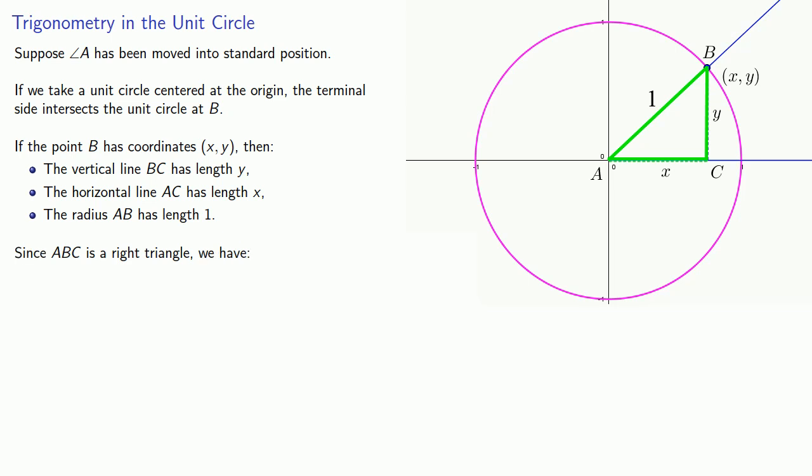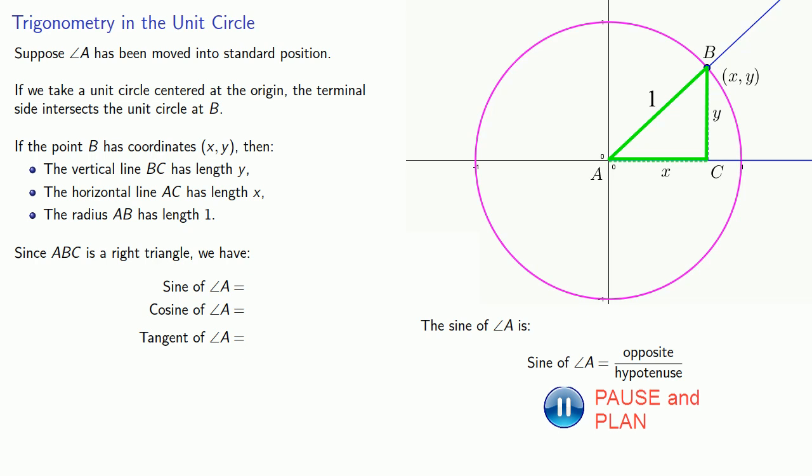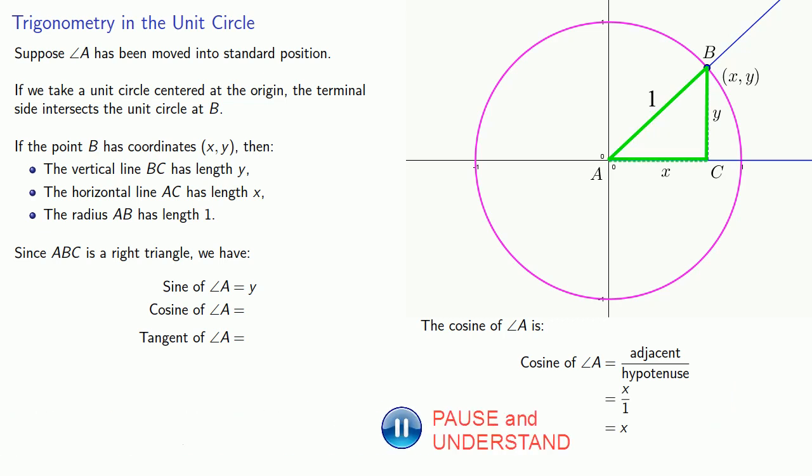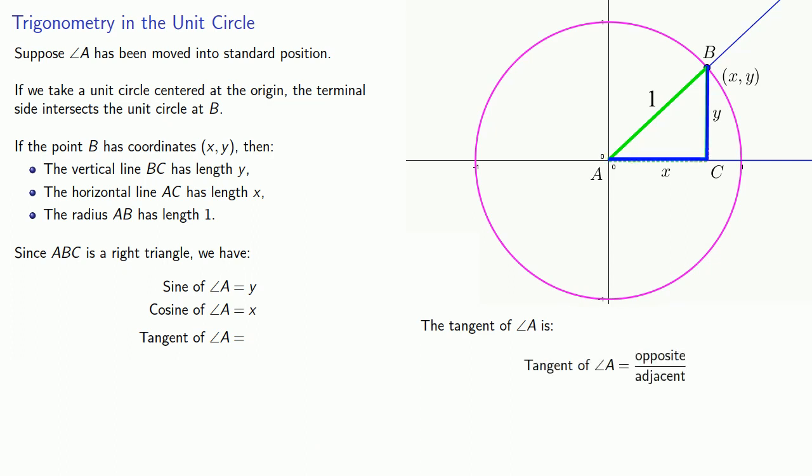Now since ABC is a right triangle, we can talk about the sine, cosine, and tangent of this angle A. So the sine of A is going to be the length of the opposite side divided by the length of the hypotenuse. That opposite side has length y, and the hypotenuse, because it's the radius of the unit circle, has length 1. So the sine is y over 1, or just y. Similarly, the cosine of the angle is the adjacent over the hypotenuse, and that's going to be x over 1, or just x. And finally, the tangent is going to be the opposite over the adjacent, and that's going to be y over x.